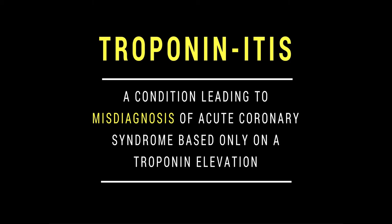Troponin is a structural protein of the heart. If you find a high level of troponin in the blood, it's there for a reason — it's never really good. Very rarely is the troponin elevated when there's not a heart problem; it's usually quite specific for myocardial injury. Troponinitis shouldn't be thought of as a problem of the troponin test — it's our problem as clinicians. It's the condition that affects us when we misdiagnose acute coronary syndromes based only on a troponin elevation. The cure for troponinitis is to educate ourselves about how best to interpret troponin levels so that we don't wrongly diagnose acute MI.